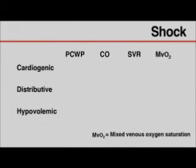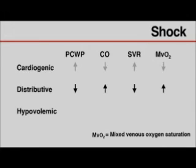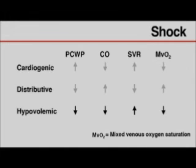In patients with shock of unknown cause, the pulmonary capillary wedge pressure, cardiac output, systemic vascular resistance, and mixed venous oxygen saturation can help guide the diagnosis. In cardiogenic shock, wedge pressure and vascular resistance are high, while cardiac output and mixed venous oxygen saturation are low. In the early phase of distributive shock, cardiac output and mixed venous oxygen saturation are high, and wedge pressure and vascular resistance are low. In hypovolemic shock, vascular resistance is high, while wedge pressure, cardiac output, and mixed venous oxygen saturation are low.